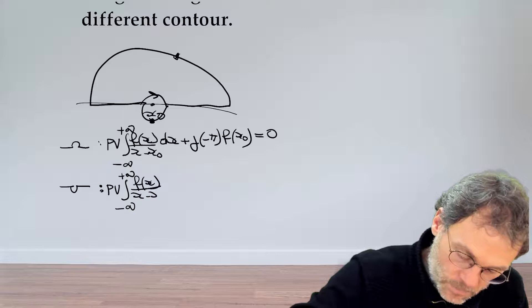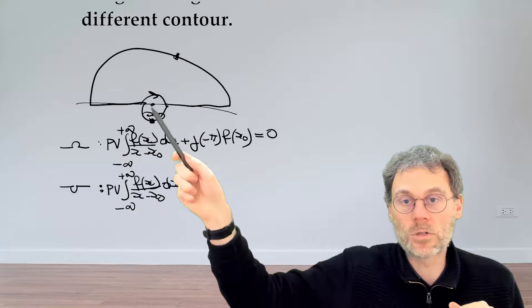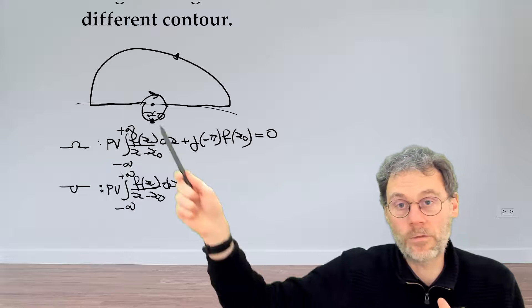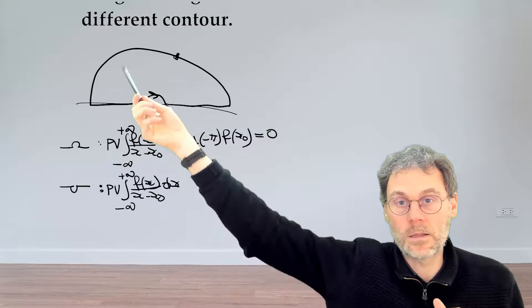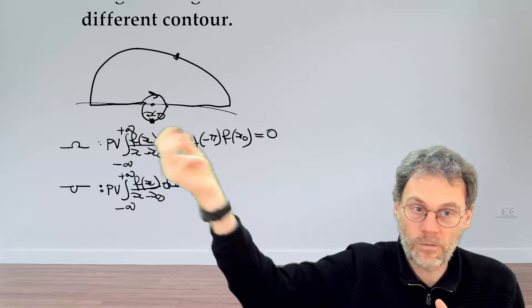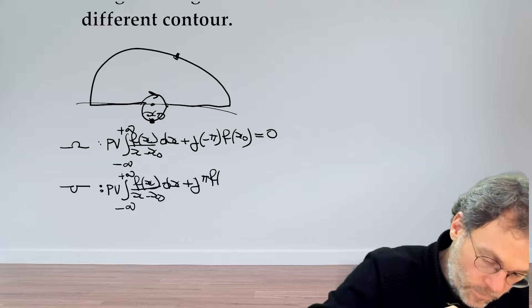Now obviously when we close in the lower half plane something changes. What changes is, well not the limit because the limit is still the same, but what's different here is the angle. In the first case we had an angle of minus pi. Now we will have an angle of pi. So here the sign flips to give us j pi f of x0.